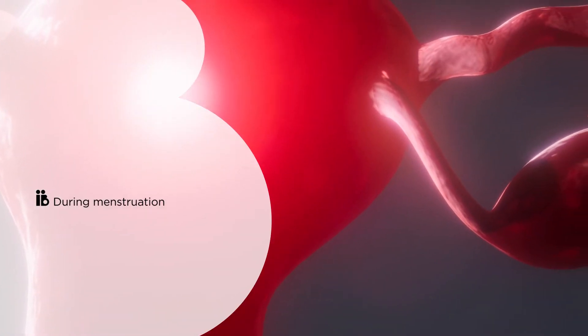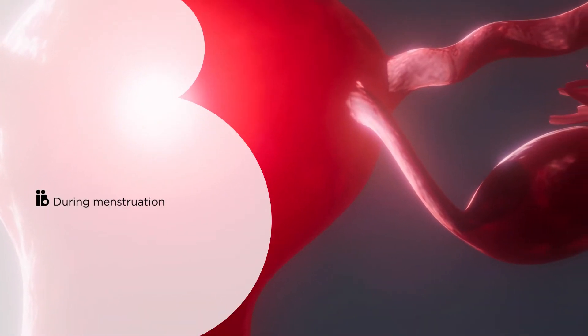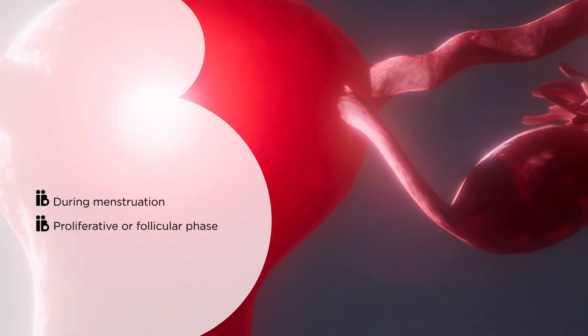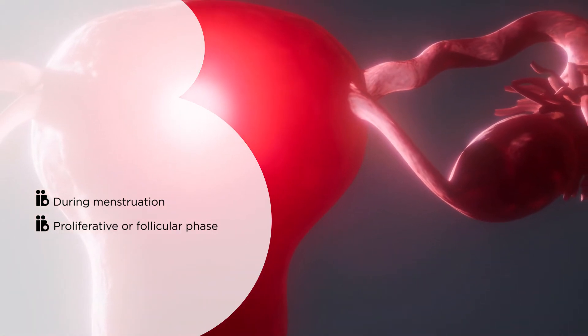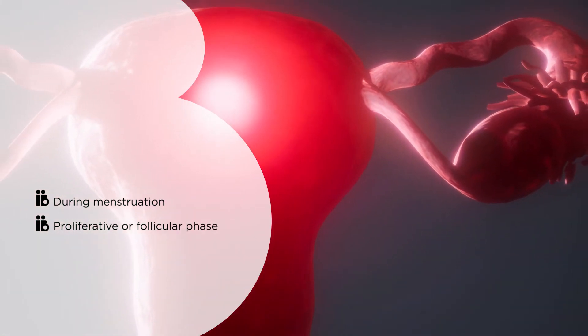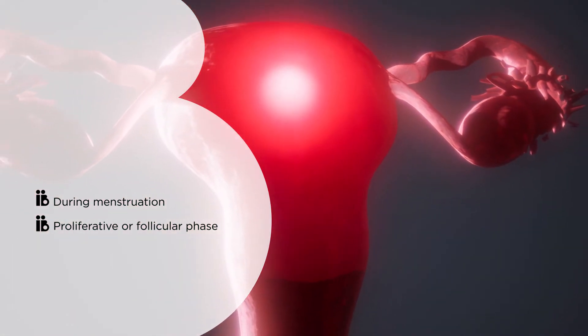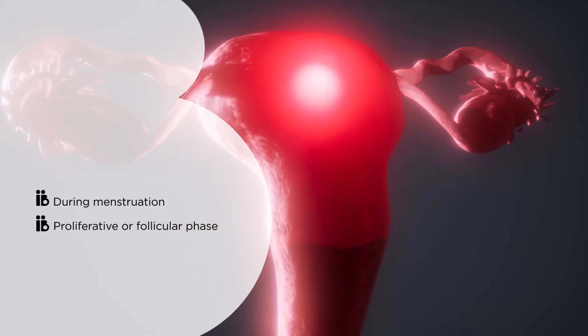There are a number of different phases throughout the cycle. During menstruation the tissue breaks up and then breaks away, causing bleeding. The phase prior to ovulation is known as the proliferative or follicular phase, and it is at this point that estrogen makes the uterus increase in thickness.